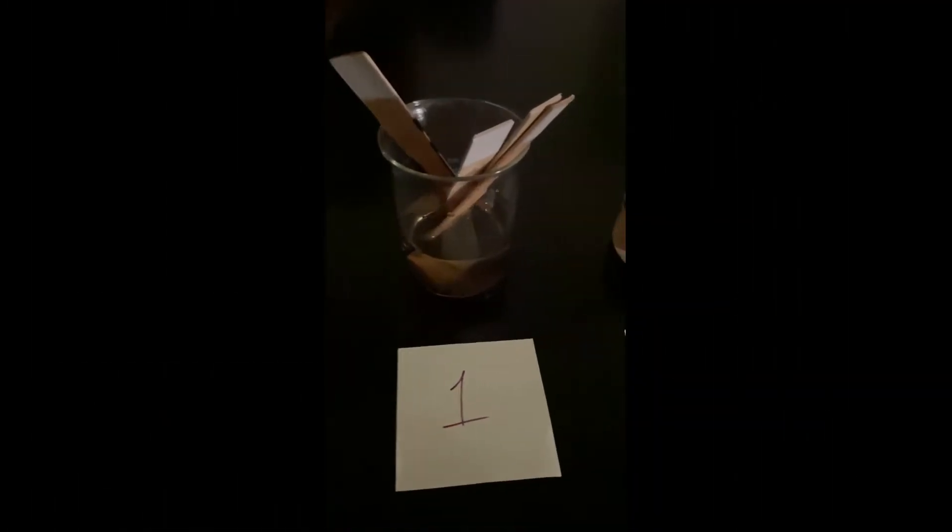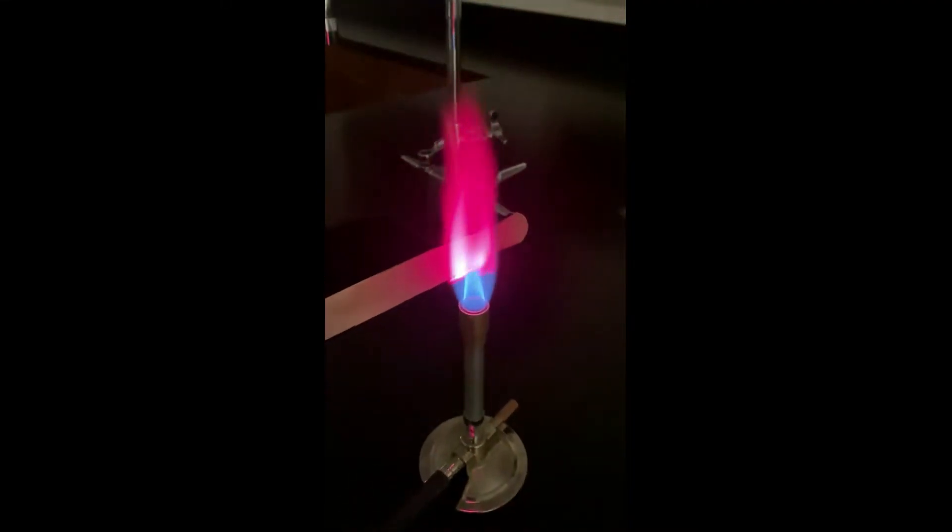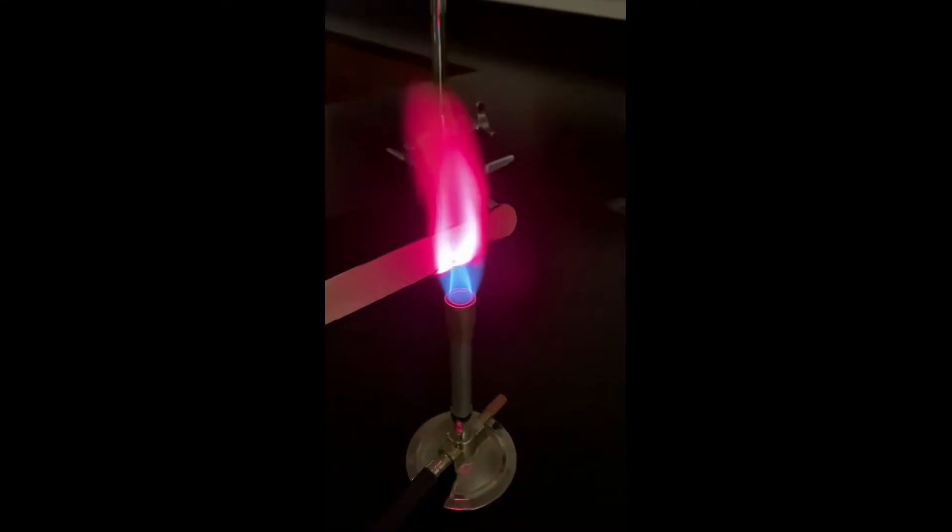All right, so let's go ahead and conduct the lab. Grab one of your popsicle sticks from station one. You want to tap it off so it doesn't have a lot of excess that's going to drip down into your Bunsen burner. Then go ahead, observe the color, look at your data sheet to see which one that matches, and stick it back into that beaker.